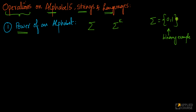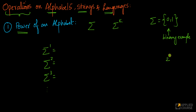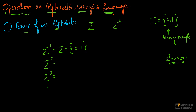So if sigma is the set {0, 1}, what does sigma power 1, sigma power 2, and sigma power 3 basically mean? You can think of this as an operator. For numbers it's very clear — 2 power 3 means 2 × 2 × 2. But for an alphabet, what does this mean? Sigma power 1 is nothing but sigma itself — the set of symbols in the alphabet.